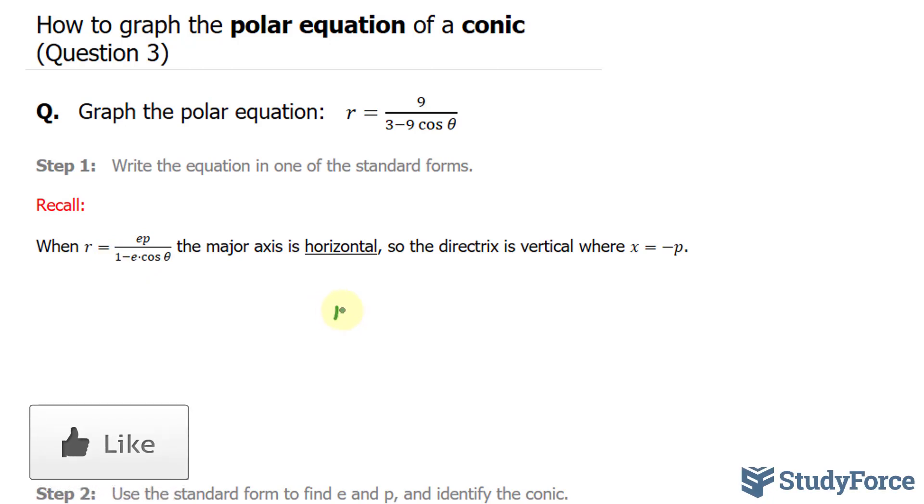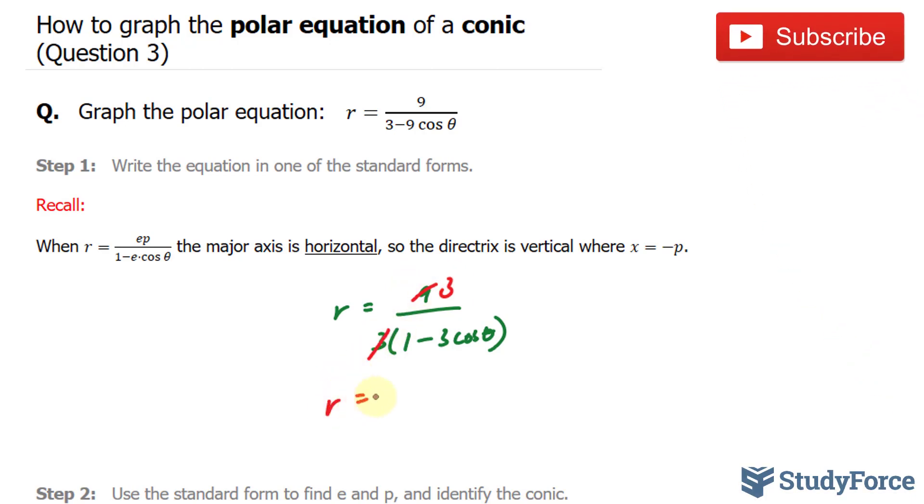Let me show you what I mean. I have r equals 9 over, I'll factor out a 3 from both. This becomes 1 minus 3 cosine theta. I can reduce this further, 9 divided by 3 gives us 3 at the top and 1 over here. So our equation is r equals 3 over 1 minus 3 cosine theta.